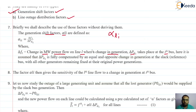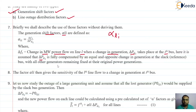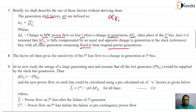Whatever change in generation occurs at the ith bus, the resulting change in megawatt power flow on line L is given by delta_FL. It is assumed that the change in generation on the ith bus is fully compensated by an equal and opposite change in generation at the slack bus, with all other bus generators remaining fixed at their original power generation. If the load is constant and there is a change in generation on any bus, that compensation is done by the generator connected at the slack bus.